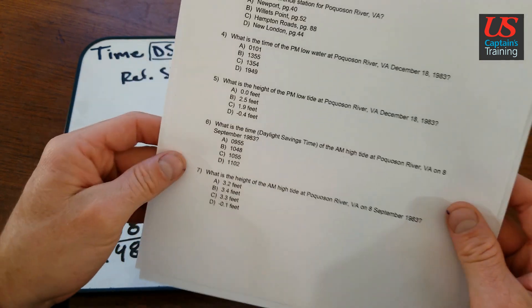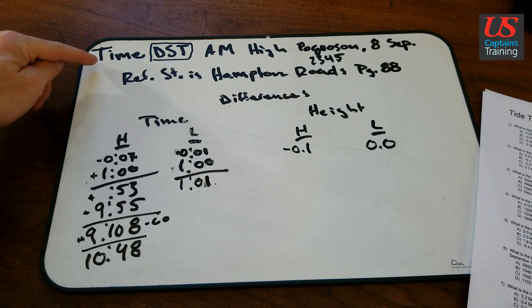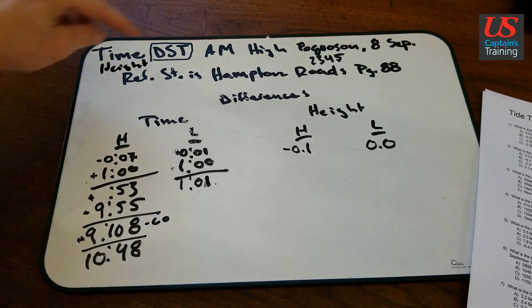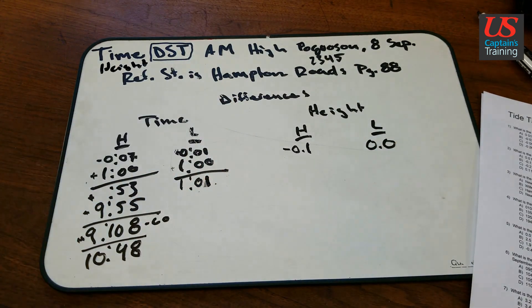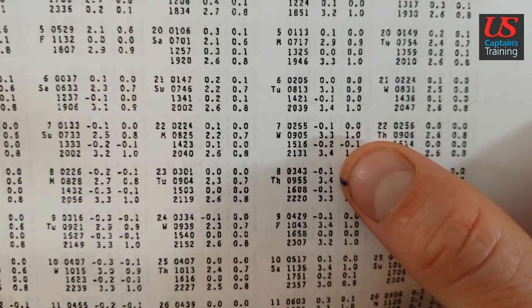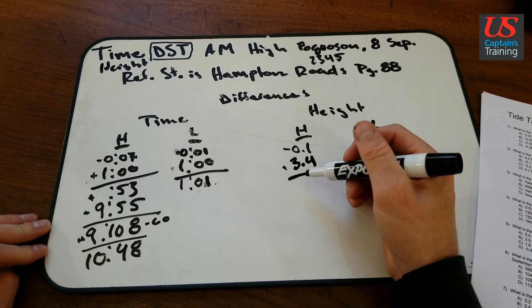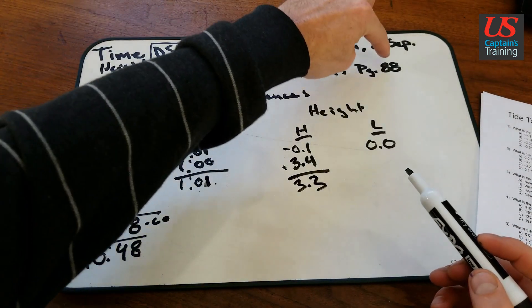Now let's look at 7. I told you 7 would fall into place. Let's see if it does. Height AM high, Pocosin River, 8th September. So instead of the time, we're looking for the height. So the height, let's just make a little note right here. Height AM high. So height AM high. Here's our difference. Now let's refer here. We're going back to the 8th, right? 8th September. And we said right here, AM high was 3.4 feet. So 3.4 feet AM high. 3.4 feet minus 0.1. So 3.3 feet is the height of the AM high Pocosin, Pocosin 8th September.